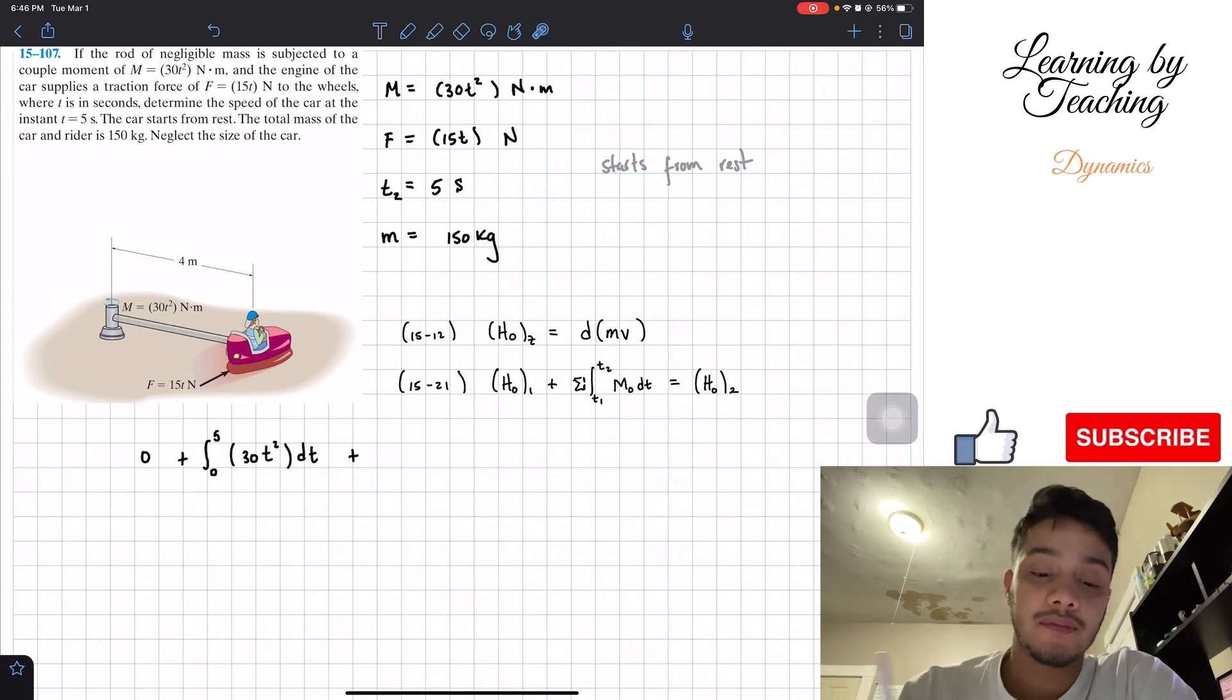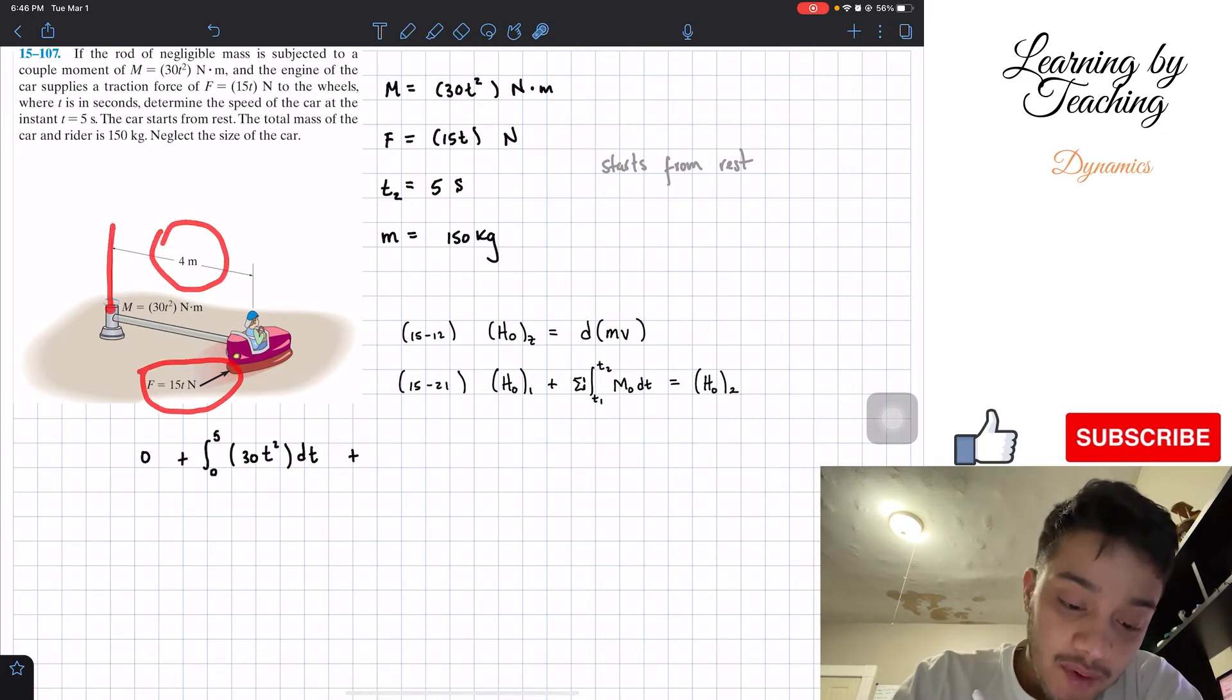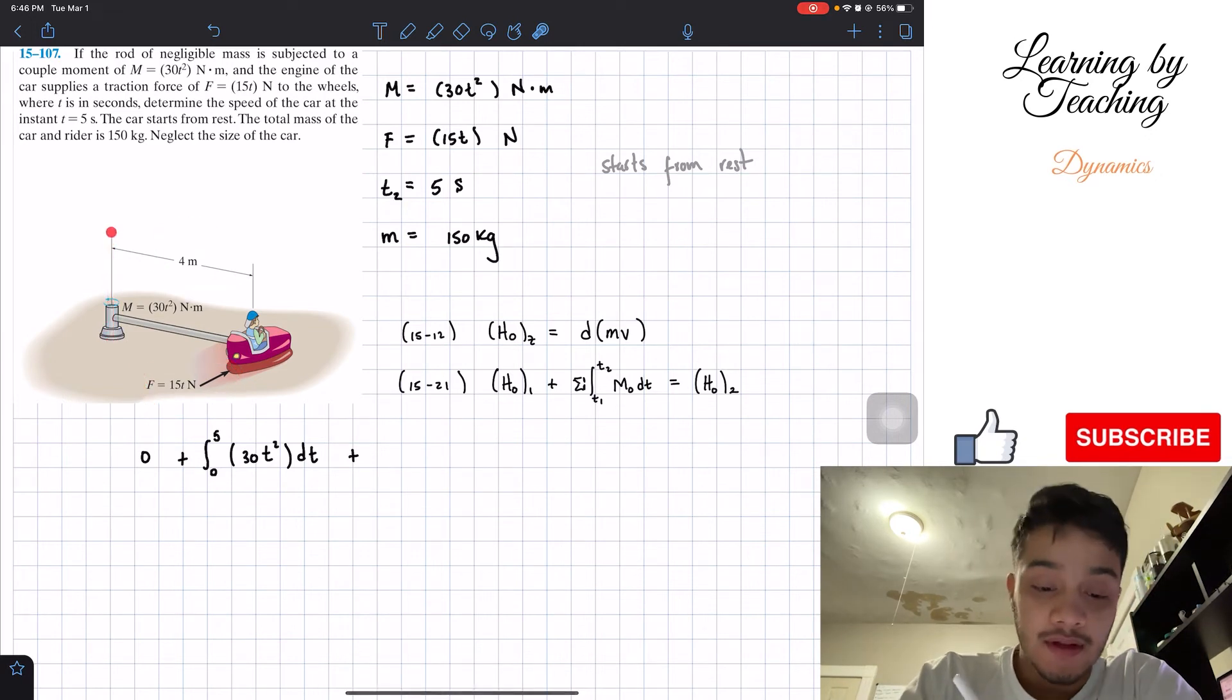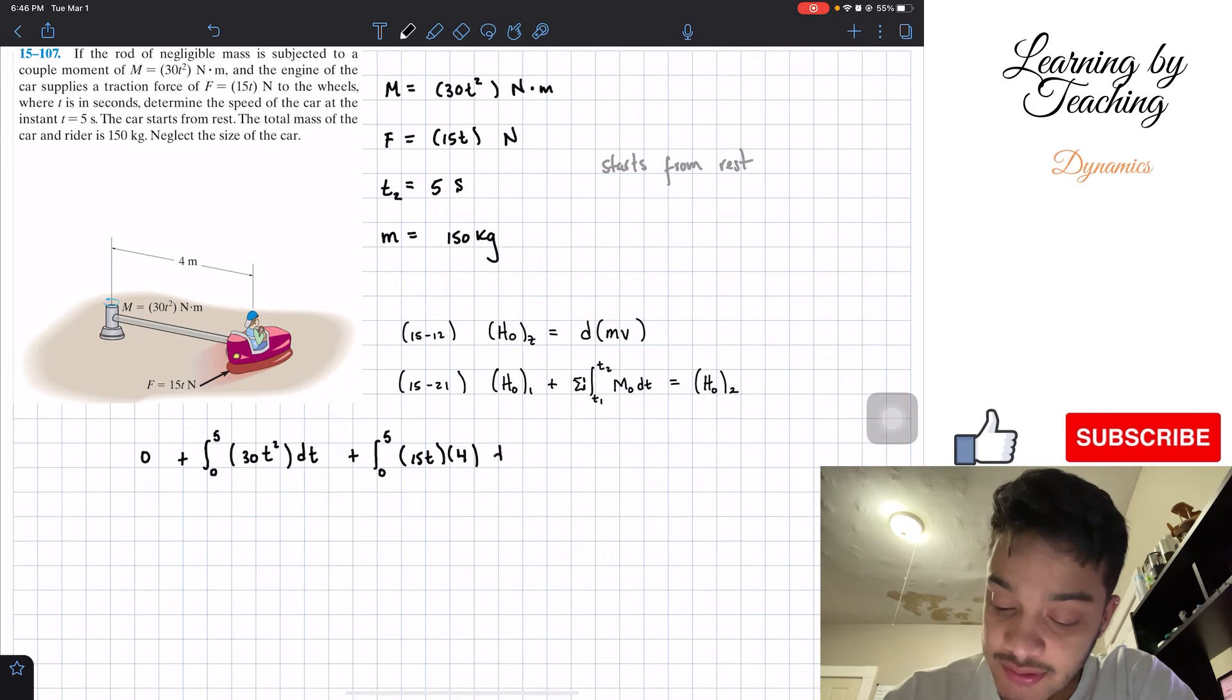And then we have plus, do we have another moment? We will initially think that no, we don't. But if we go back to the statics, we have that this force times this distance will create a moment around this, let's call it this z-axis. So what we are going to say is, all right, we have another moment from zero all the way to five of the force times the distance. Well, what is the distance? The distance never changed. It's a constant and it's equal to four. So we're going to put 4F dt.